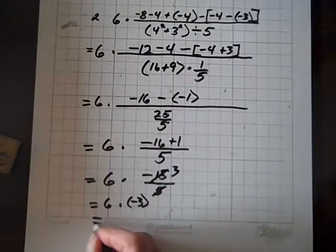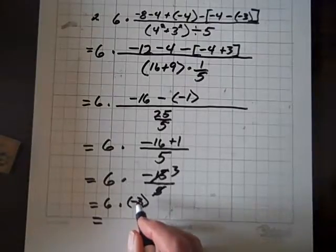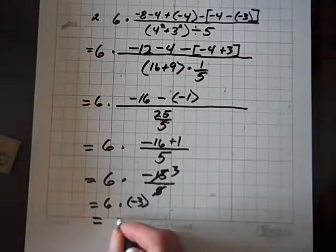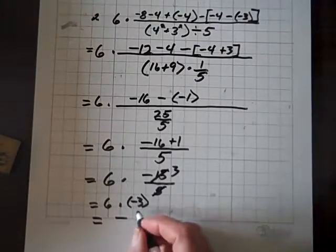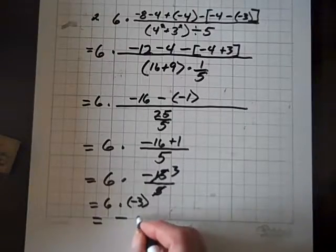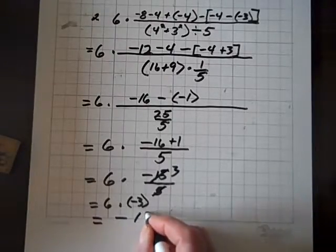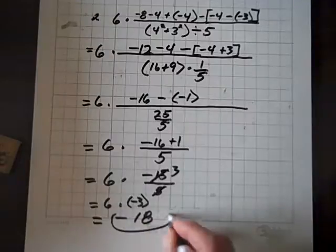So times negative three, and that equals six times negative three. The product is going to be negative because we have an odd number of negative factors. Six times three is eighteen, so the answer is negative eighteen, and we are done.